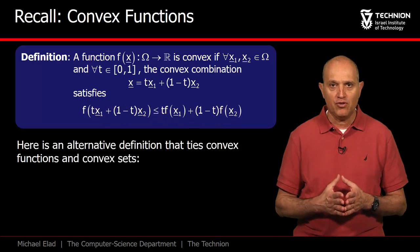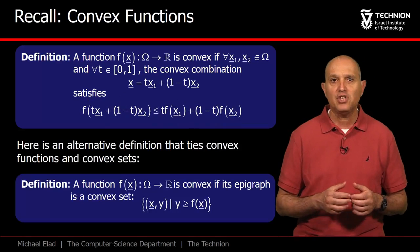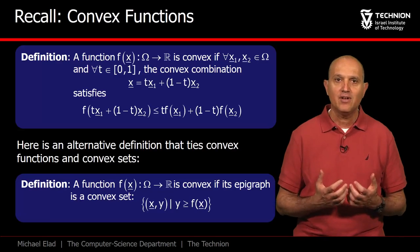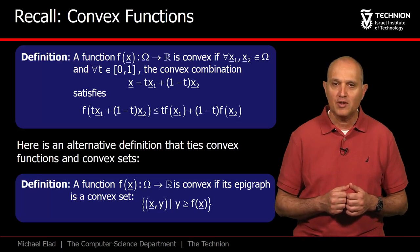An alternative definition of convexity that relates to the definition of convex sets is this: a function is convex if its epigraph is a convex set. In order to better explain these two definitions, we move to examples.